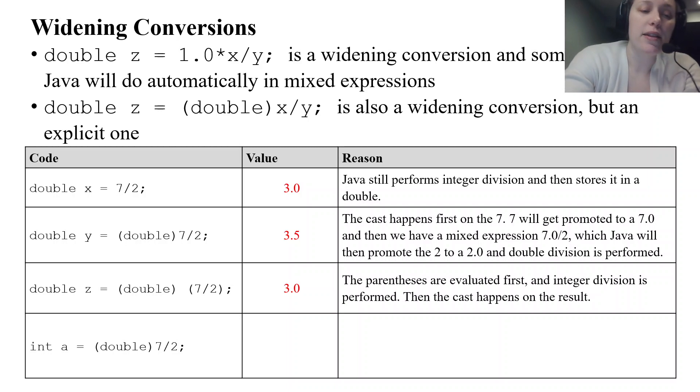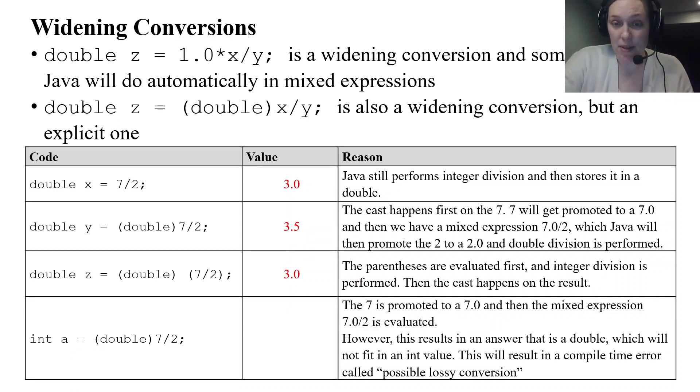Now this last one, again the double happens on the 7. So we get 7.0. 7.0 divided by 2, promote the 2 to 2.0. We get 3.5. Now the problem with this is the container a. We're trying to take 3.5, the result that we get from this expression, and we're trying to store it in a which is an integer. And that's where we run into problems. A double cannot fit into an integer. This results in a compiler error. And the message that usually goes along with it is possible lossy conversion, meaning the conversion that is happening, you're going to lose information. So there's a compiler error. It actually won't do it.